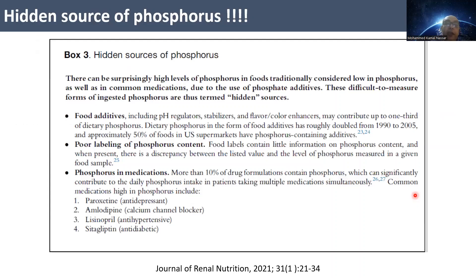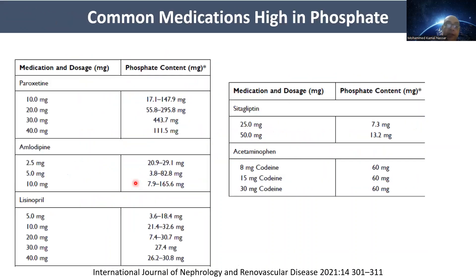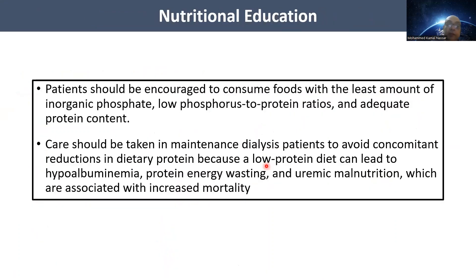You should also be aware of hidden sources of phosphorus, such as food additives and poor labeling of phosphate content on food labels, as well as phosphorus in medications. Some commonly used medications contain high concentrations of phosphorus, including paroxetine, amlodipine, lisinopril, sitagliptin, and acetaminophen.